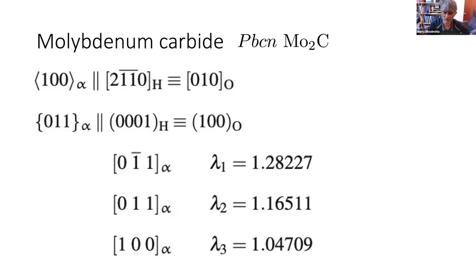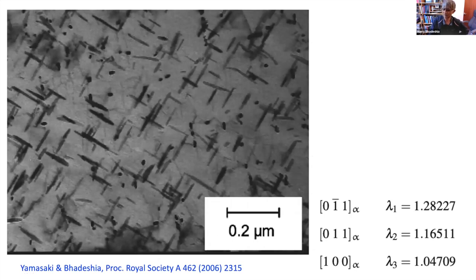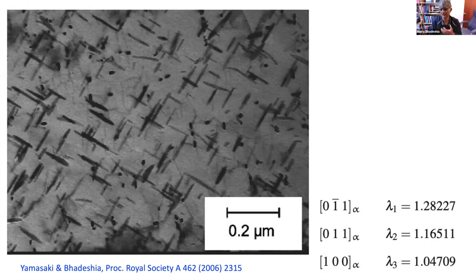It is impossible to get a displacive transformation — of course we knew that, because substitutional atom diffusion is required — but we can still use this information. The strain fields show that if you had a coherent particle, the strain fields along one direction would be intolerable at any observable size. This is why molybdenum carbide in steels forms as needles along the zero-zero-one direction of ferrite — the two orthogonal variants of molybdenum carbide form needles along the direction of minimum deformation needed to change ferrite into molybdenum carbide. You can thus explain the shape of a diffusionally formed carbide simply by looking at the deformations required.